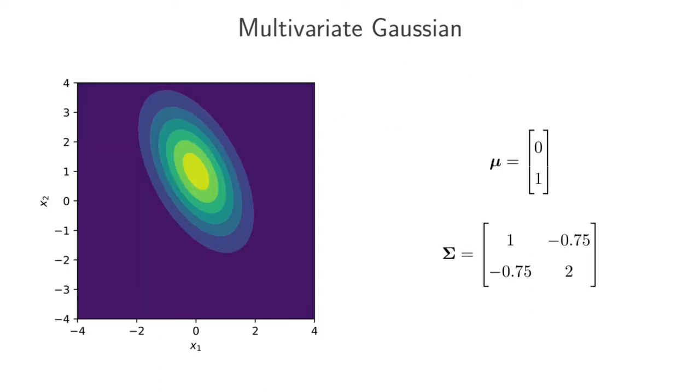In all of the examples, we're going to look at a two dimensional multivariate Gaussian. We're looking at the probability density function, the PDF, basically from the top with lighter colors indicating higher PDF values and darker colors indicating lower values. And what we're doing here is we're looking at an arbitrary multivariate Gaussian distribution in two dimensions.